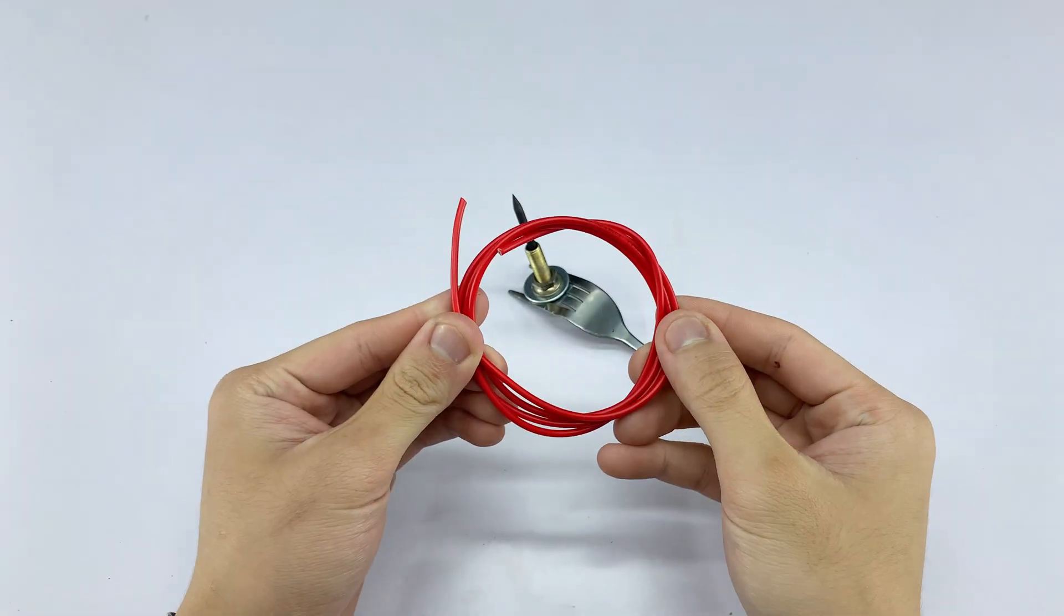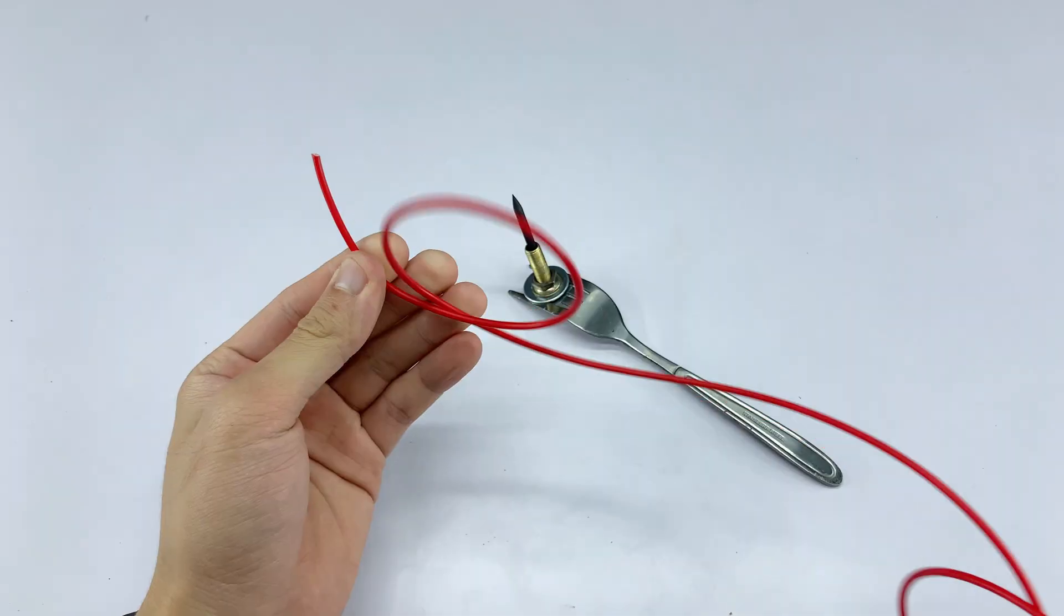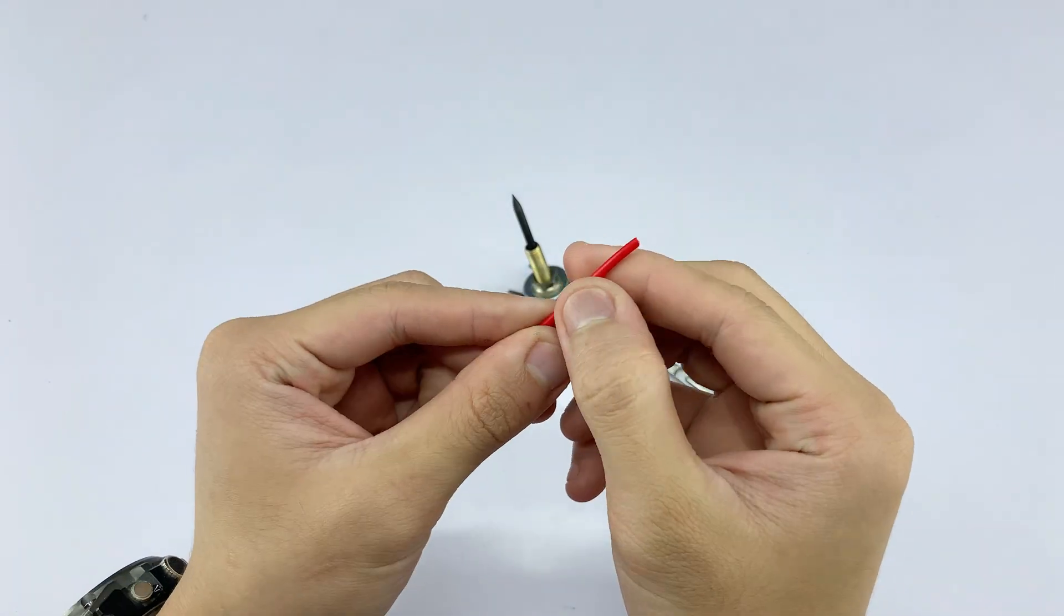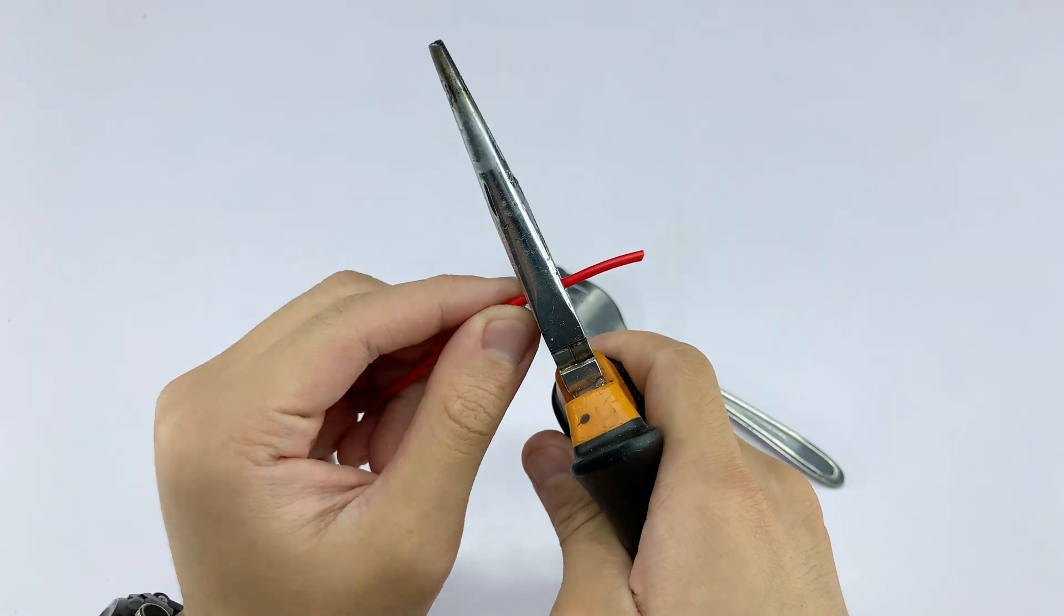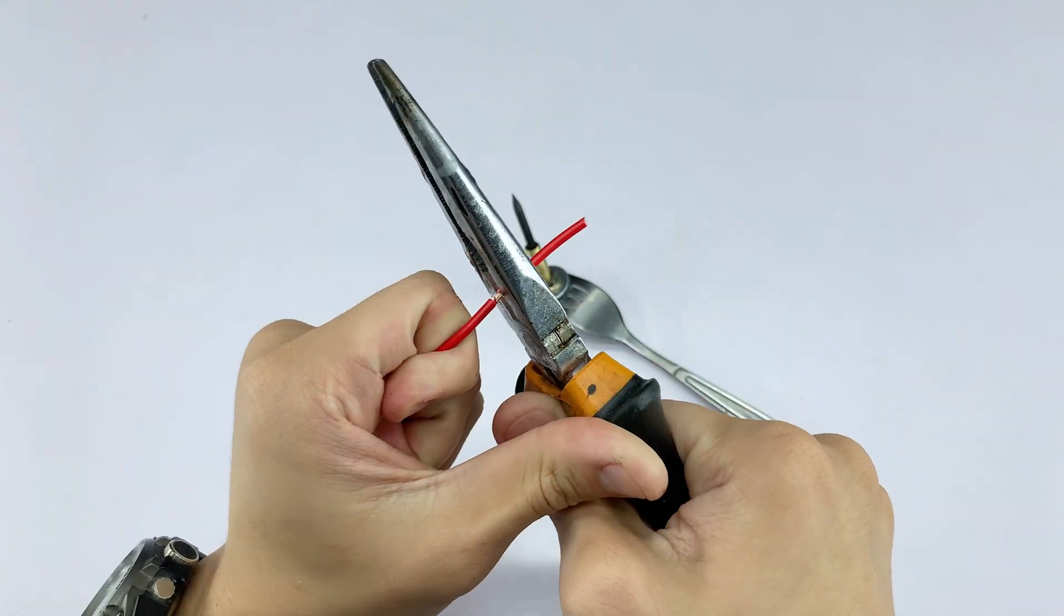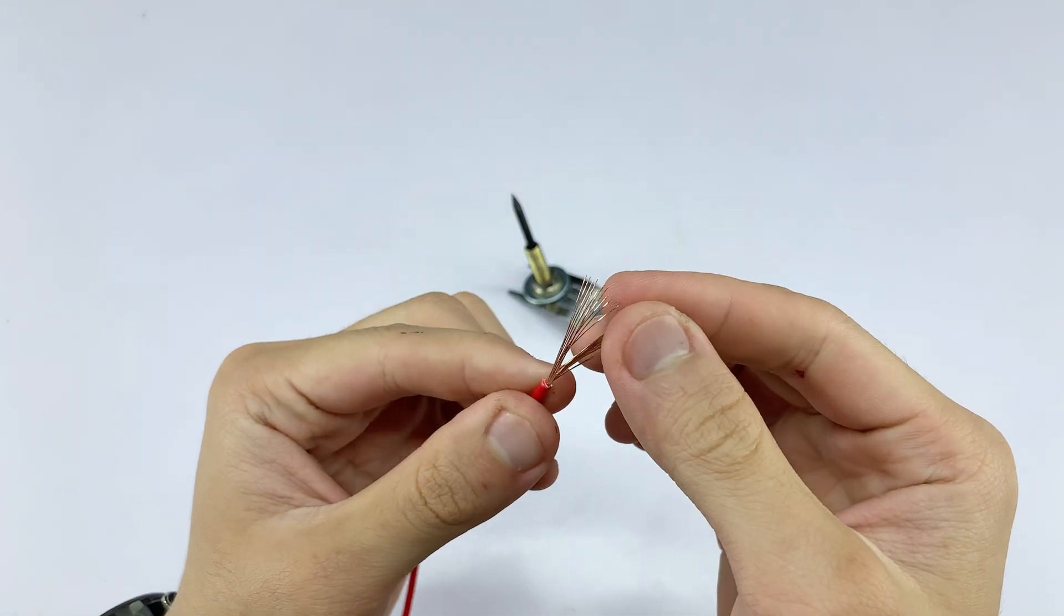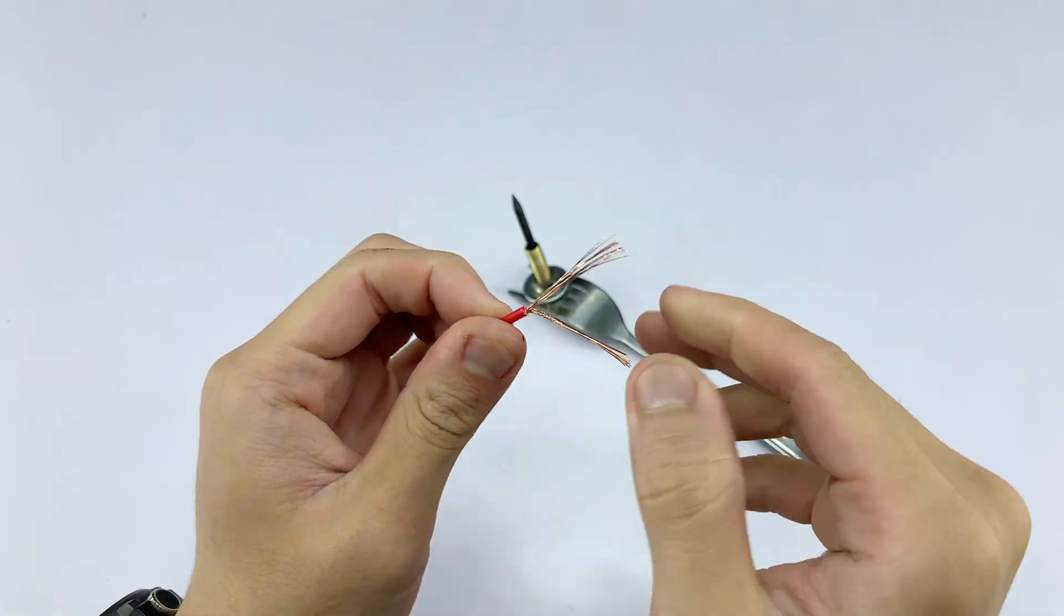Now, we need to create the electrical connections. I'm taking a length of red electrical wire. I'm stripping a small section of insulation from one end of the red wire. This exposes the conductive copper strands, which are essential for completing our circuit.